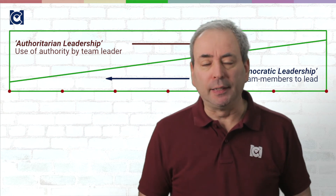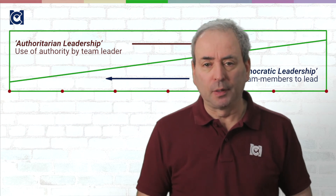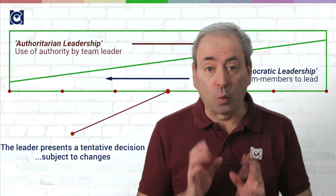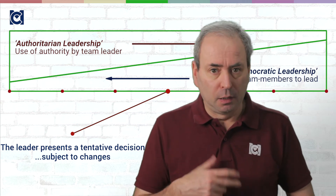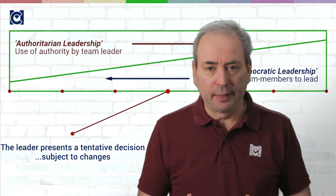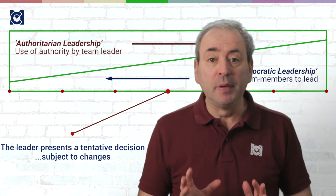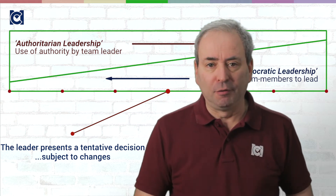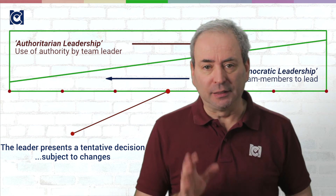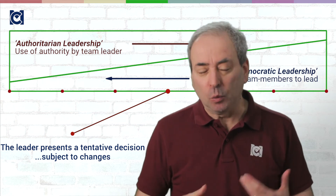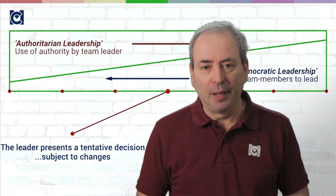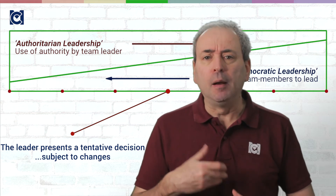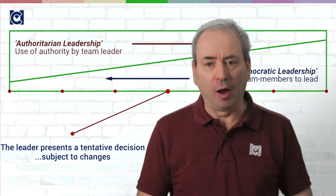In the middle of our range, at the fourth level, you as a leader are not only prepared to answer questions about your decision and possibly review it — you are now committed to changing your decision should the team find flaws in it and suggest better ways. Now you are really engaging your team, having made your tentative first decision, in polishing it up and getting it right.